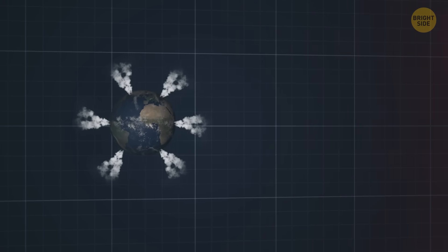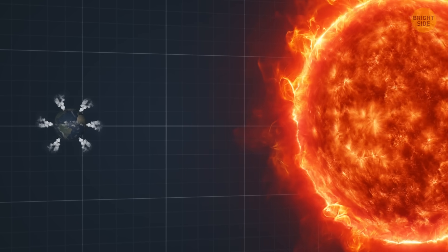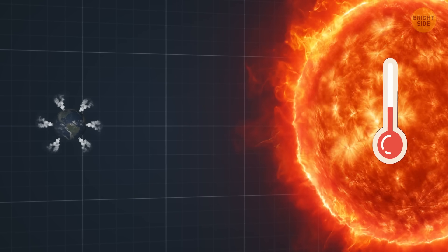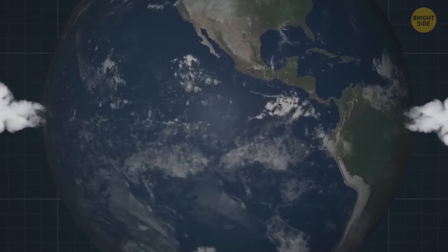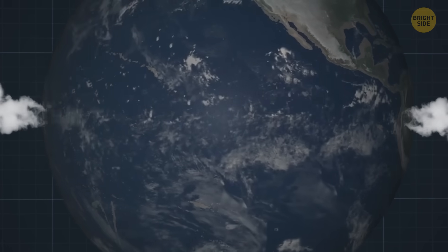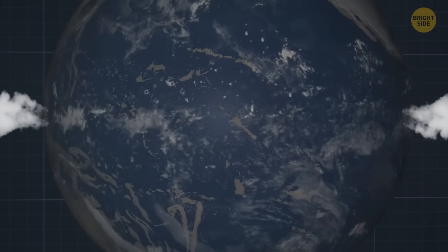You might be wondering how they came up with that number. It turns out that when the sun gets hotter, it makes the atmosphere warmer too. And as the atmosphere warms up, more and more water evaporates from the oceans.